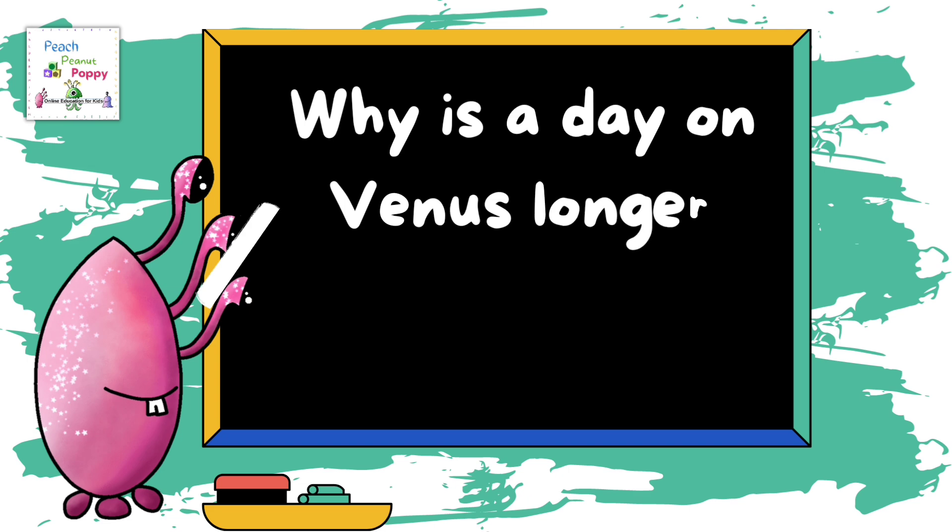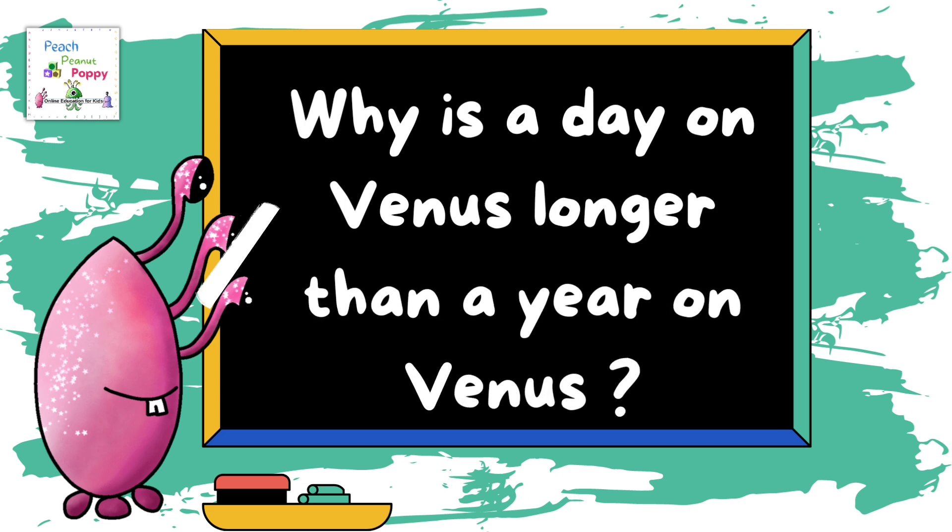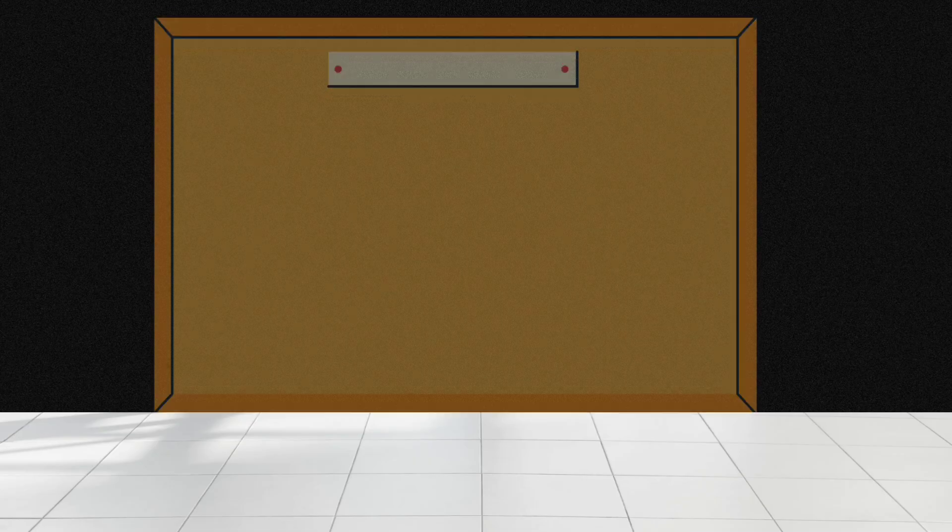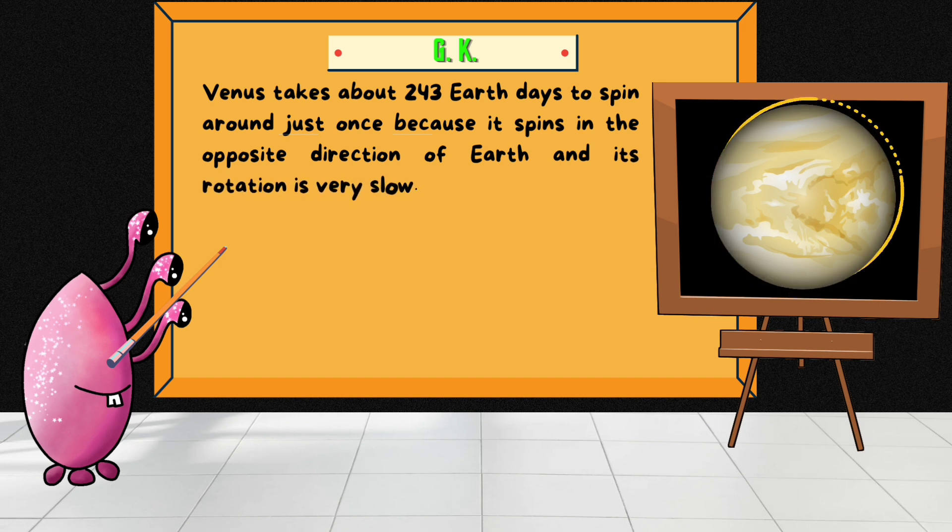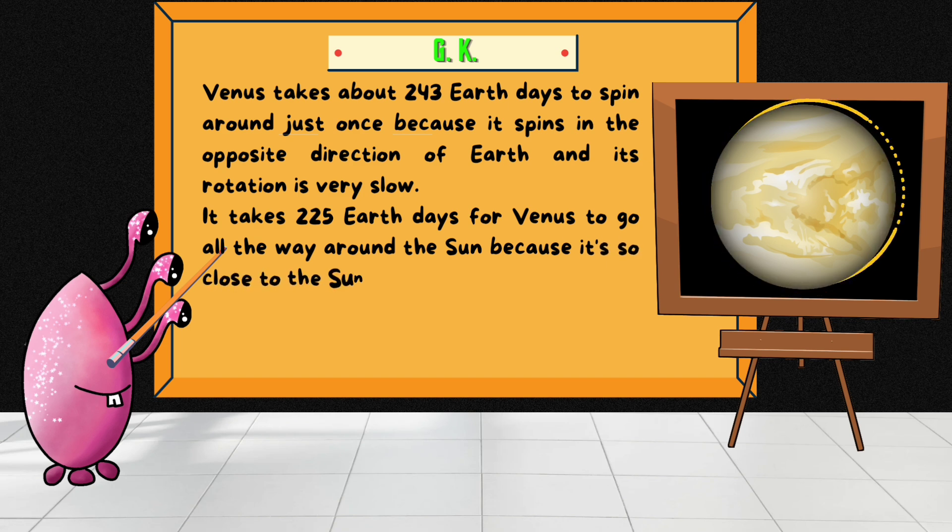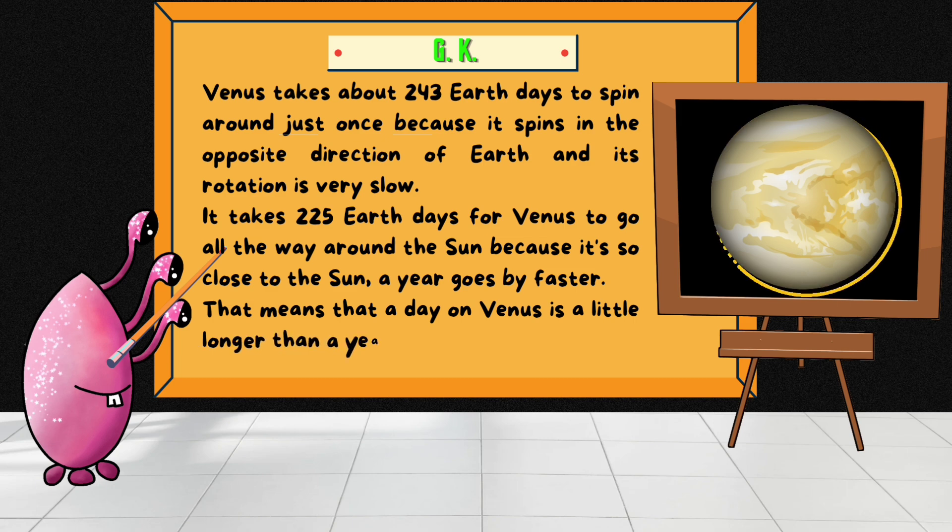Why is a day on Venus longer than a year on Venus? Venus takes about 243 Earth days to spin around just once because it spins in the opposite direction of Earth and its rotation is very slow. It takes 225 Earth days for Venus to go all around the sun. Because it's so close to the sun, a year goes by faster. That means that a day on Venus is a little longer than a year on Venus.